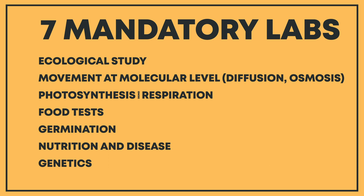You need to do labs about food tests, which falls under nutrition — specifically heterotrophic nutrition — so you're testing for different macromolecules: fats, starch, and protein. You also need to do labs regarding growth, in particular germination. The sixth topic is nutrition and disease, so you need a lab centered around how diseases are spread — this could be done as a planning and designing lab, but it doesn't have to be. The final mandatory topic is genetics.